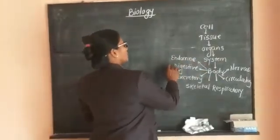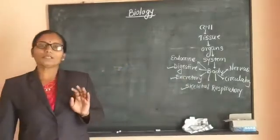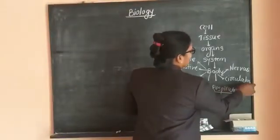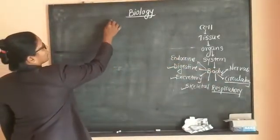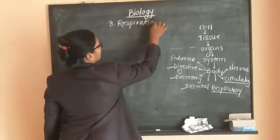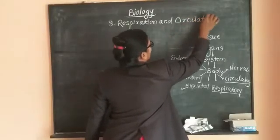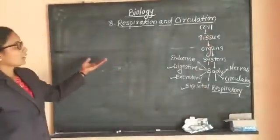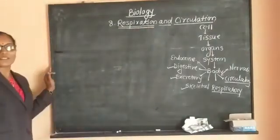Now from these, the digestive system, excretory system, and skeletal system are completed in 11th standard. In 12th standard, the respiratory system and circulatory system — these two systems are combined under chapter number 8, named as Respiration and Circulation. In the old syllabus of 12th, these two were separate chapters. Today we are going to study about the first chapter, that is respiration.